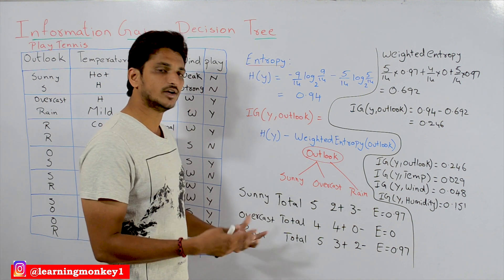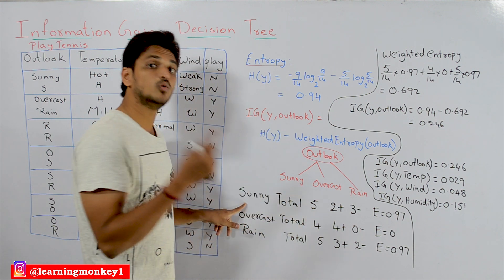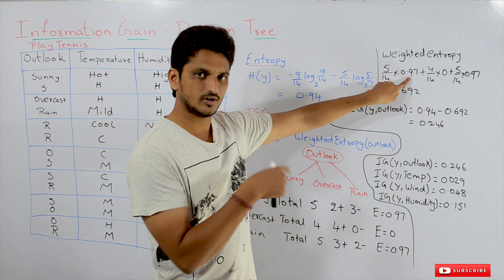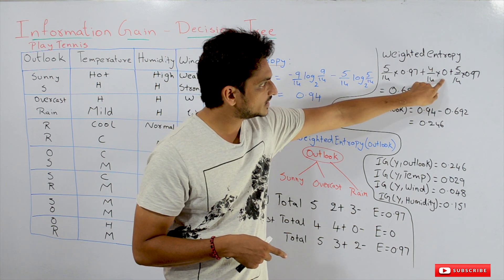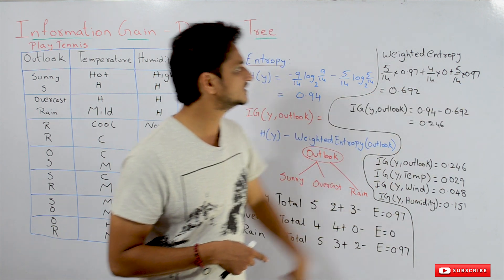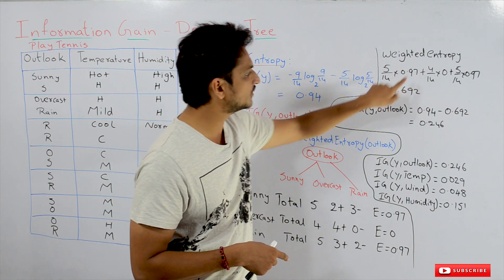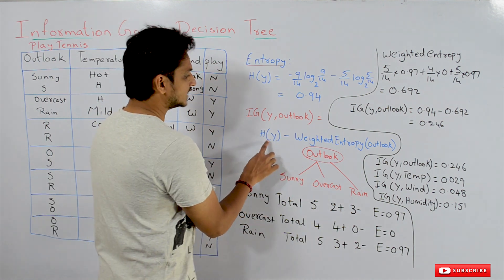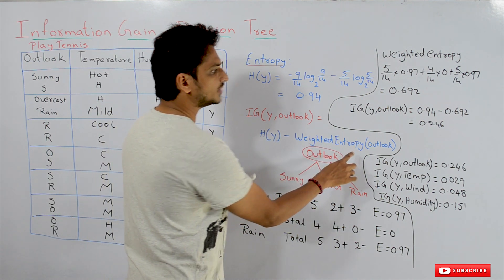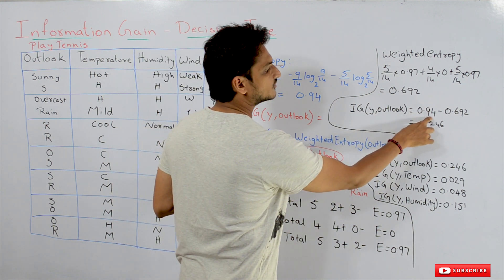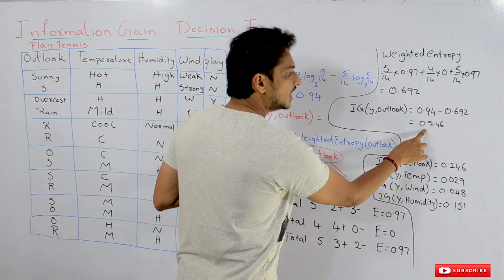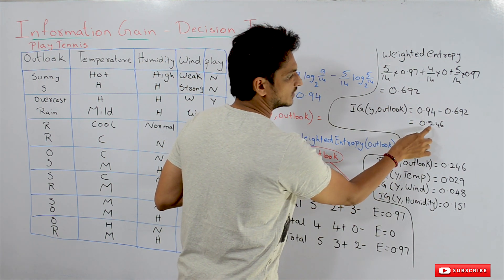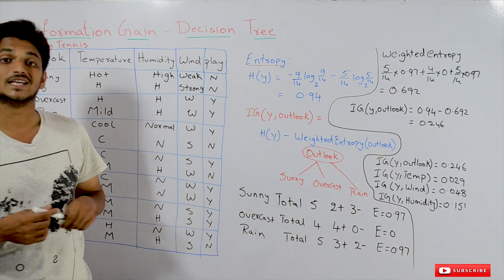How to calculate the weighted entropy? Sunny has 5 out of 14 points, so: (5/14) × 0.97. The total weighted entropy we got is 0.692. The equation for information gain is H(y) minus weighted entropy of outlook, so 0.94 − 0.692 = 0.246. The information gain value for the outlook column is equal to 0.246.